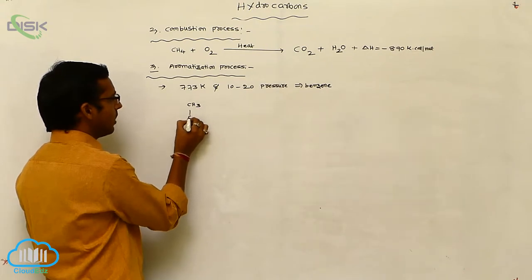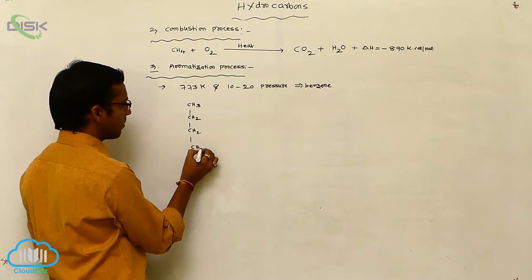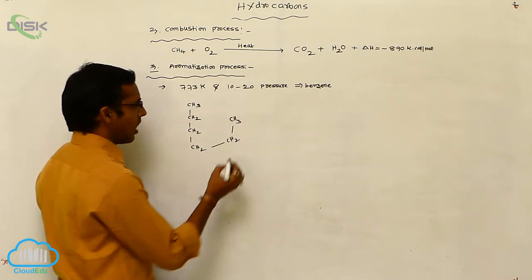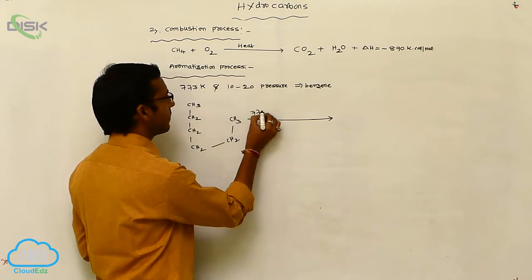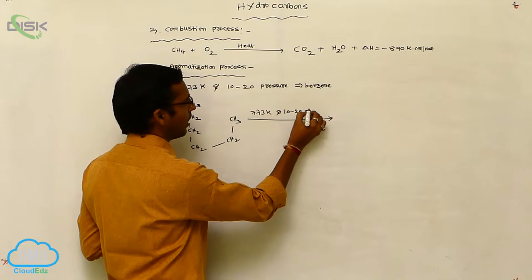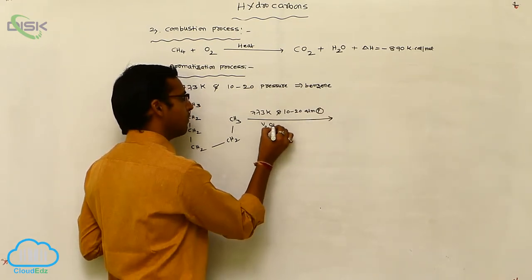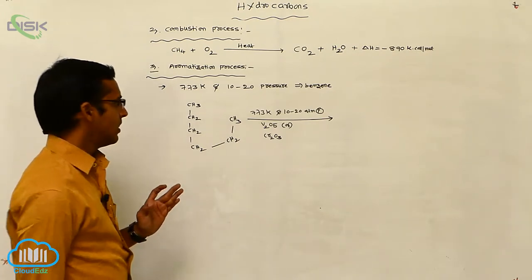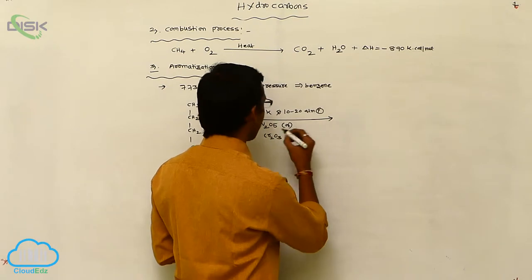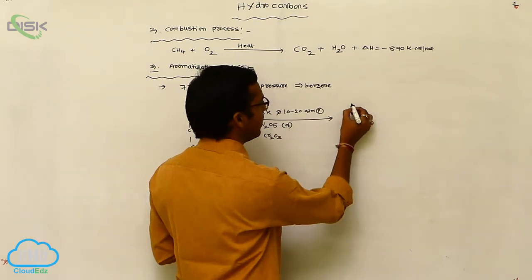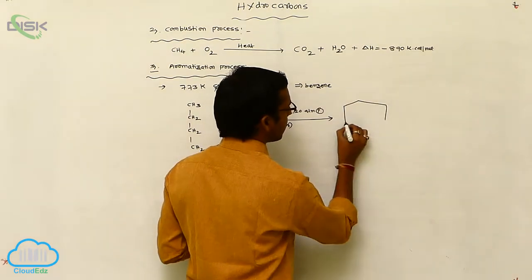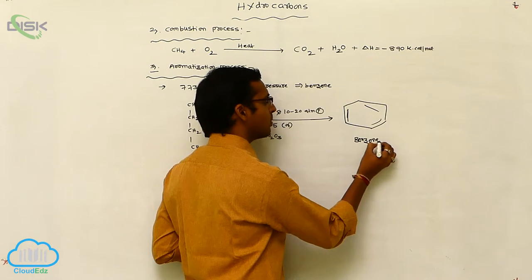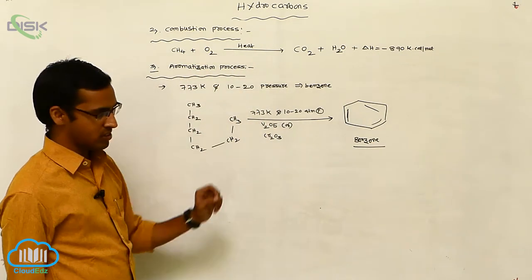If you consider six carbons — 1, 2, 3, 4, 5, 6 — these six carbons, or more number of carbons, are heated at 773 Kelvin and 10 to 20 atmospheric pressure in the presence of vanadium pentoxide or chromium oxide (Cr2O3). In the presence of these catalysts, dehydrogenation occurs — meaning the removal of hydrogens — and it gives an aromatic product. This aromatic product is called benzene. The formation of an aromatic compound is called the aromatization process.